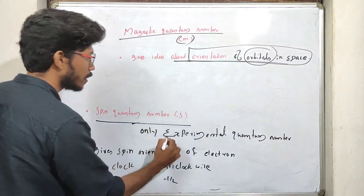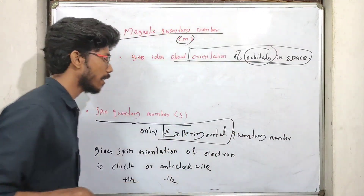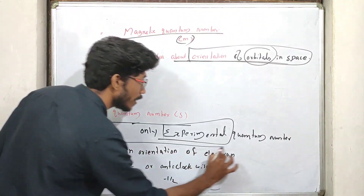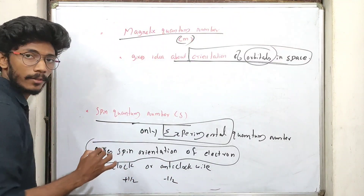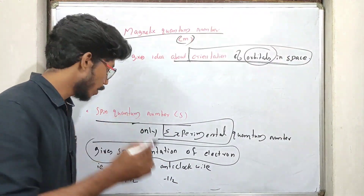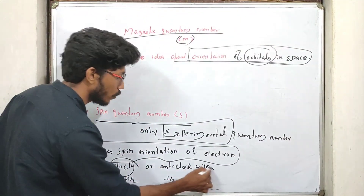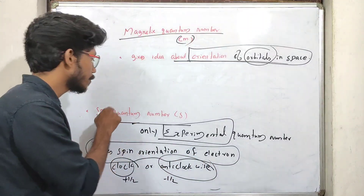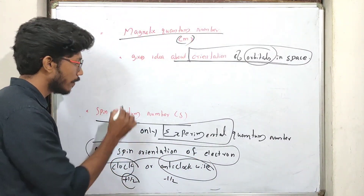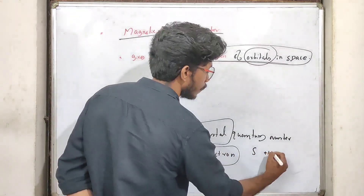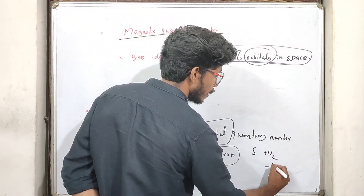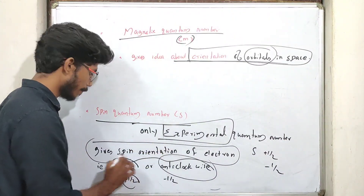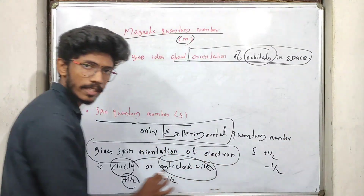The spin quantum number gives the spin orientation of electrons — whether it is clockwise or anticlockwise. It is necessary to orient the electrons. For clockwise spin, the value is plus half; for anticlockwise spin, the value is minus half. This gives the spin orientation of the electron.